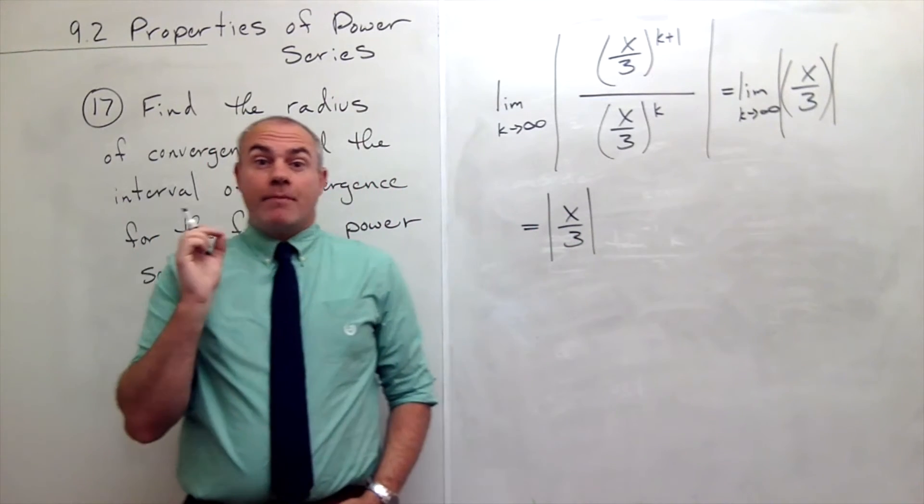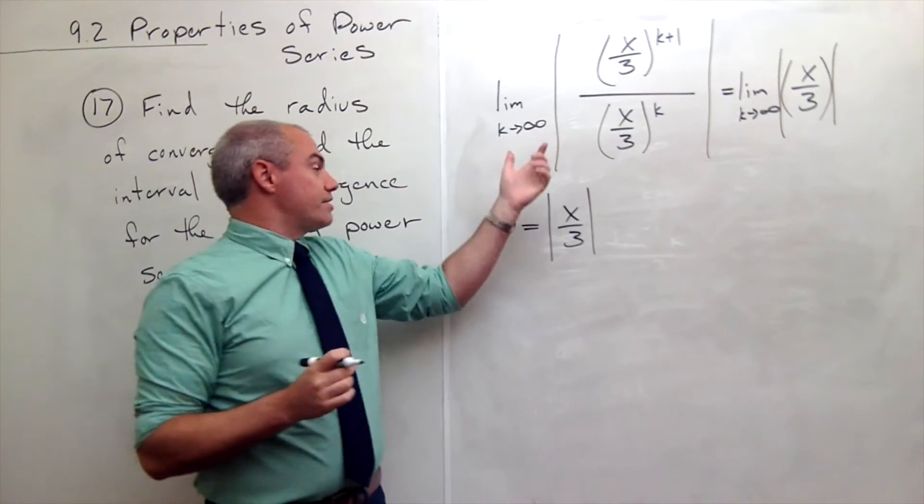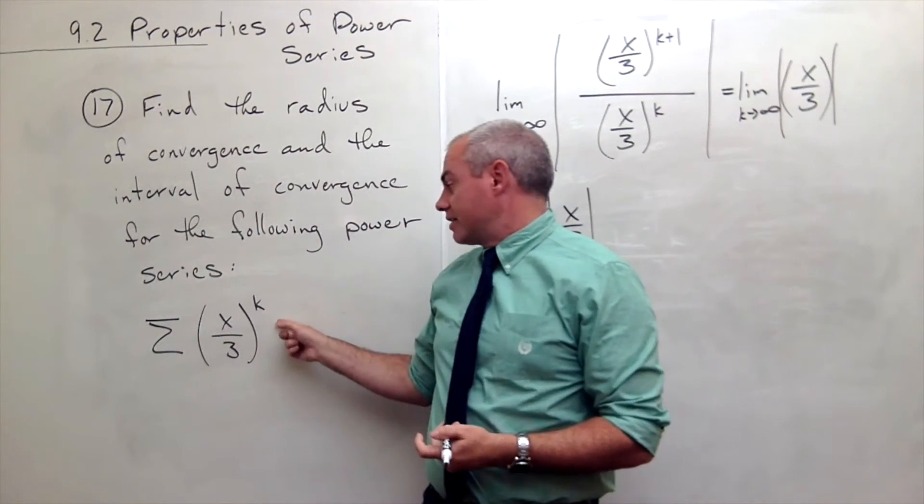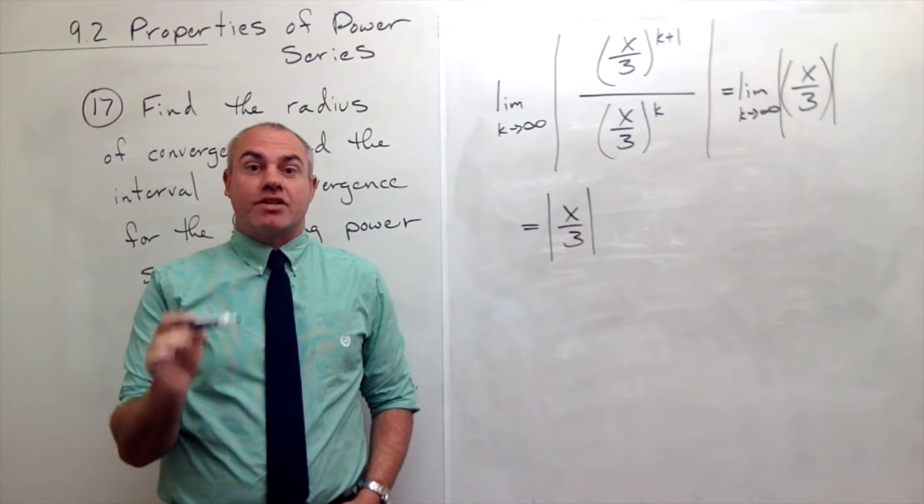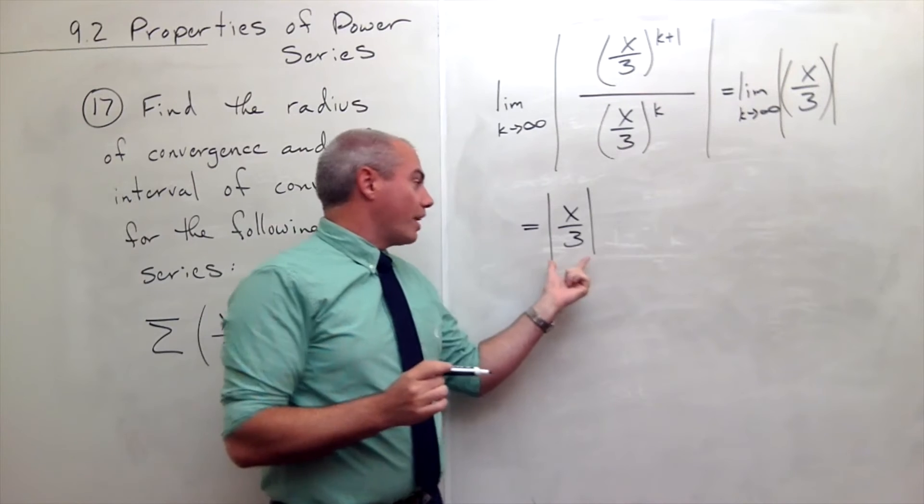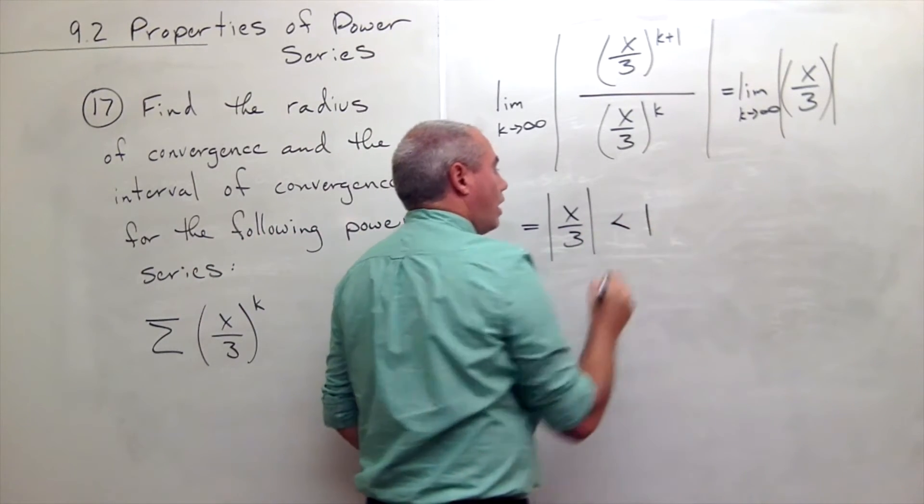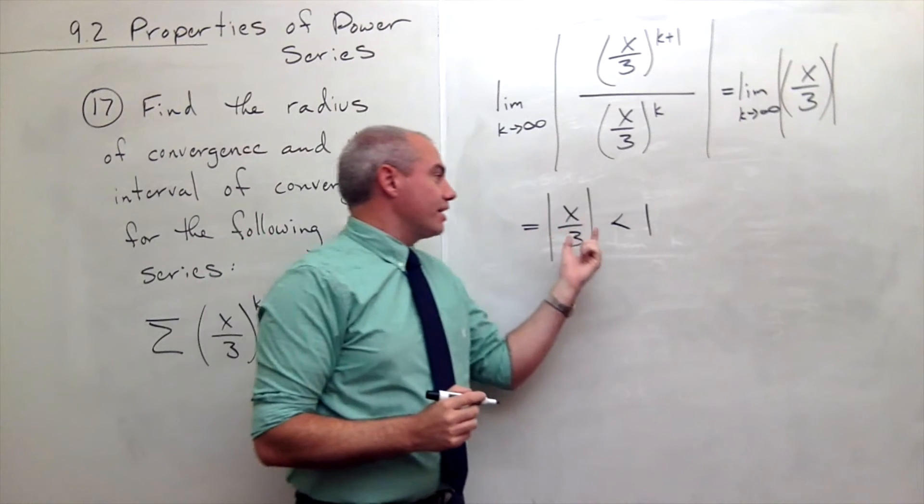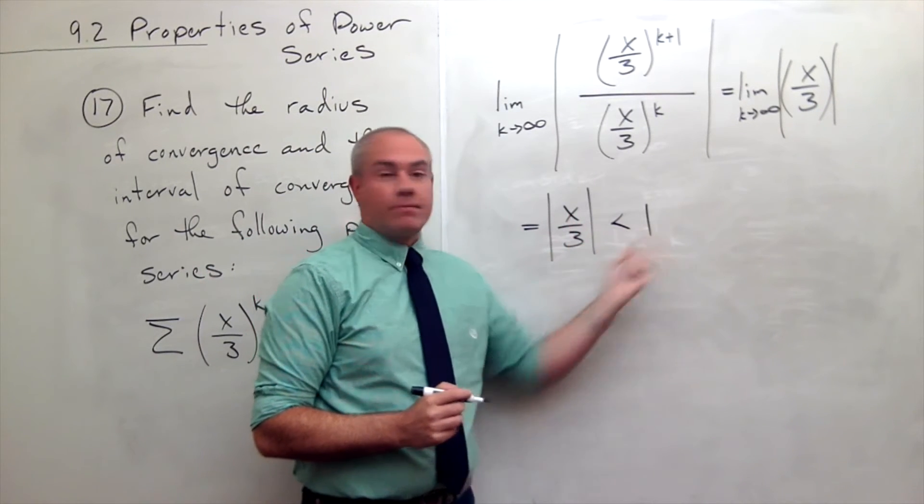Now, remember I'm doing the ratio test, and I want to know, does this series converge or diverge? Well, the ratio test converges when what I get out of the ratio test is less than 1. So if I want this thing to converge, the absolute value of x/3 needs to be less than 1.